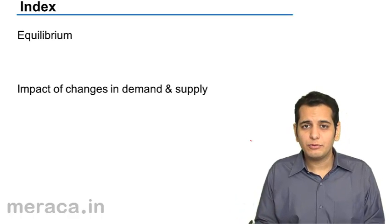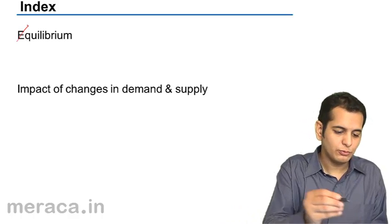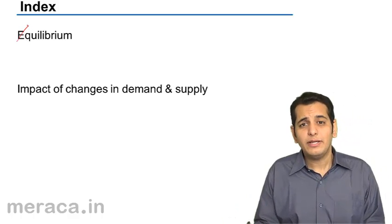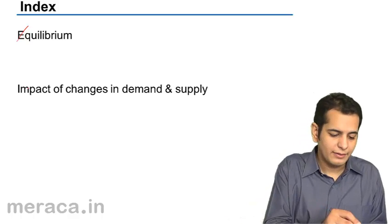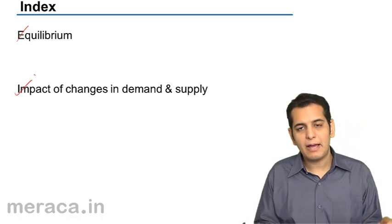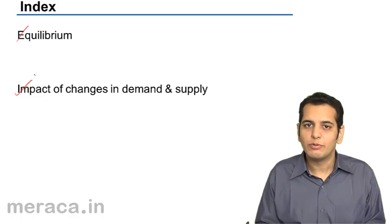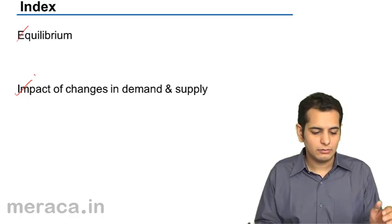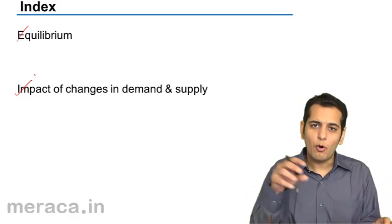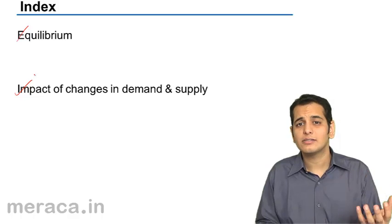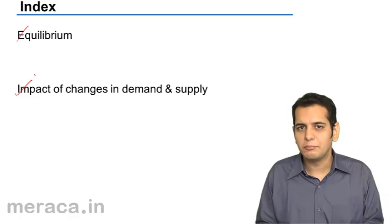Let us see what we have to cover under this topic. First, we have to see how the equilibrium of price and quantity is attained in a market. And next, we'll see the impact of changes in demand and supply on the equilibrium. But before understanding the impact of changes of demand and supply on the equilibrium, let us first understand how do we reach the equilibrium — how is equilibrium attained?